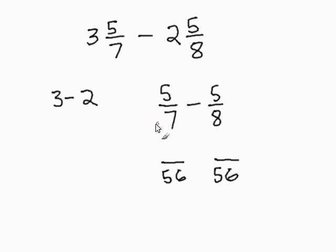7 goes into 56 8 times, so we multiply the bottom by 8 and the top by 8. 5 times 8 is 40.